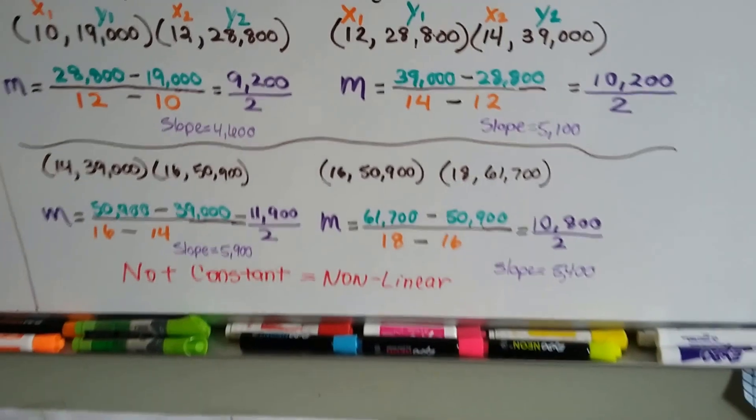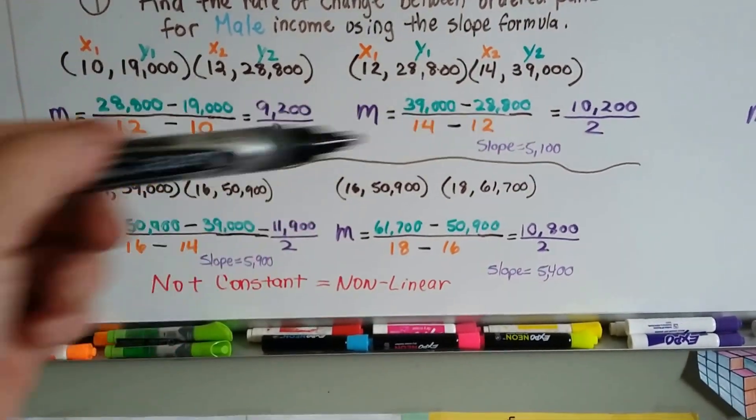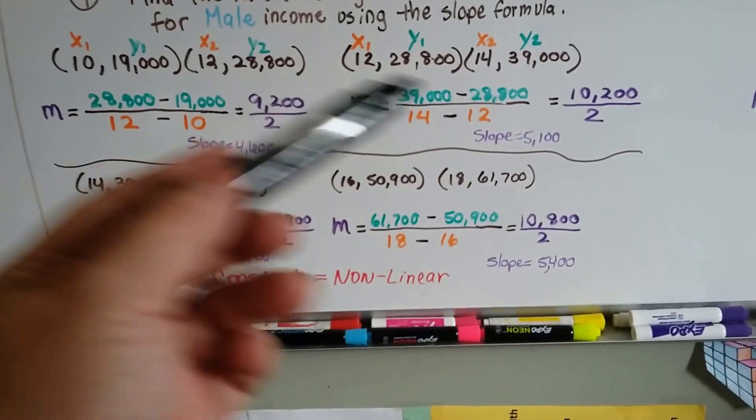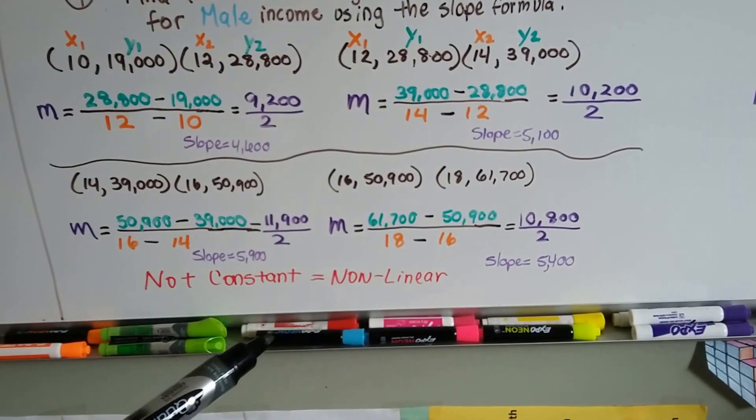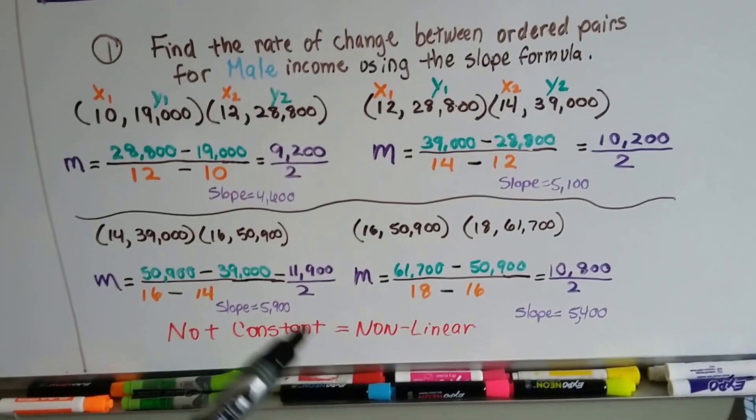So that's not constant, it's not linear. Our slope goes $4,600, $5,100, $5,900, $5,400, and they're very close to each other, they're all close to $5,000, but it's not constant, it's not the exact same number, so this is non-linear.